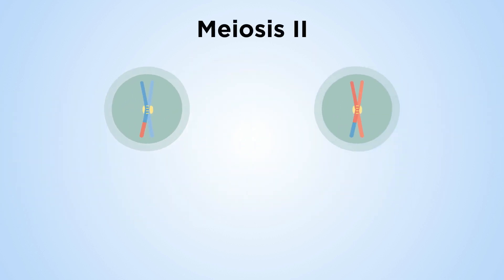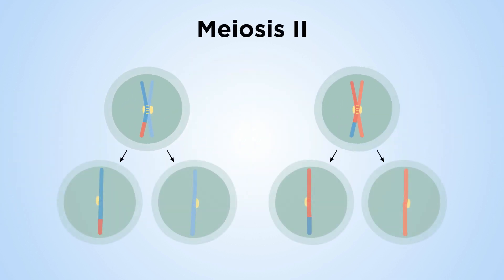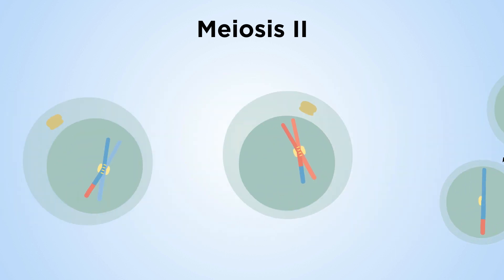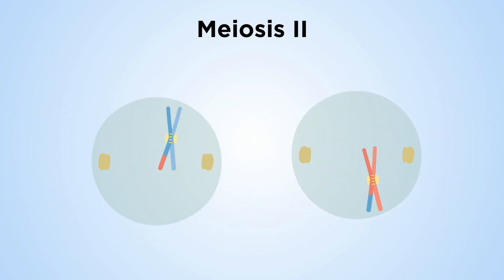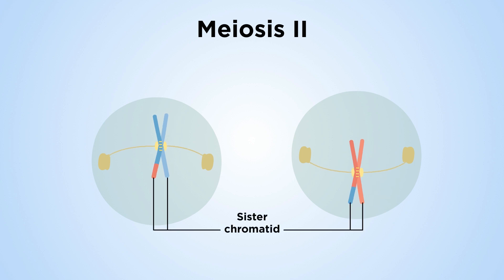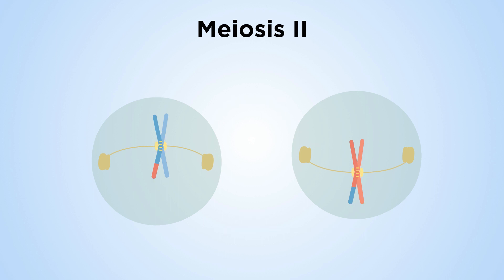In meiosis II, chromosomes attach to the spindle differently, with changes in chromosome structure, and chromatids are distributed with one to each future gamete. When the chromosome attaches to the spindle, a single kinetochore is associated with each sister chromatid, and the kinetochores separate. Throughout metaphase II, centromere cohesion is retained.